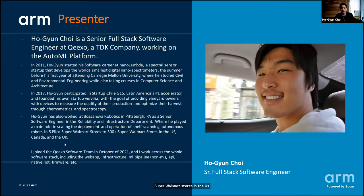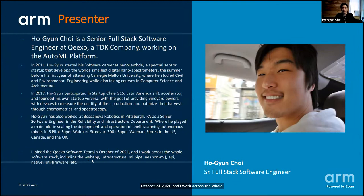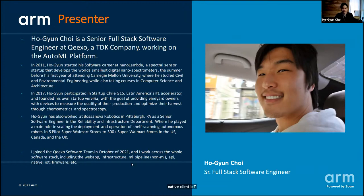In 2017, I participated in Startup Chile, generation 15, Latin America's number one accelerator, and founded my own startup, VariVinia, with the goal of providing vineyard owners devices to measure the quality of their production and optimize their harvest through chemometrics and spectroscopy. I also worked at Boston Nova Robotics in Pittsburgh, Pennsylvania as a senior software engineer, scaling deployment of shelf-scanning autonomous robots from five pilot Walmart stores to 300-plus super Walmart stores in the US, Canada, and the UK.